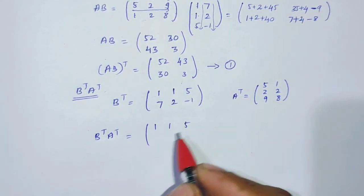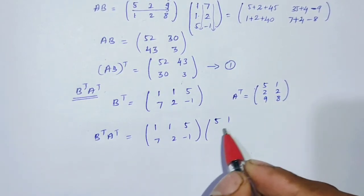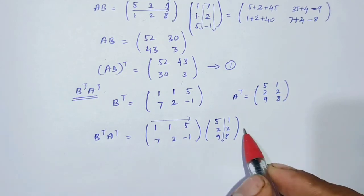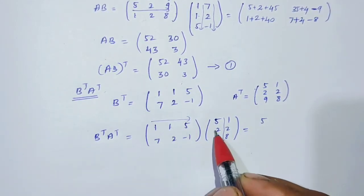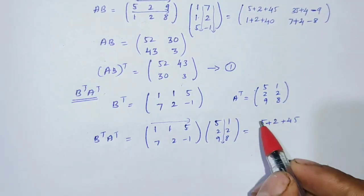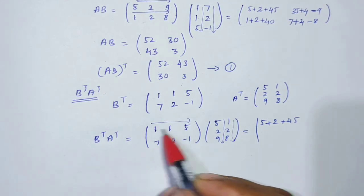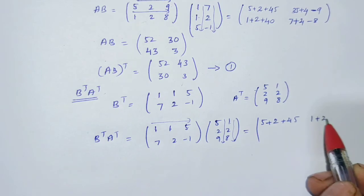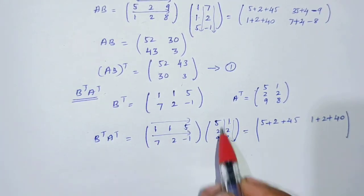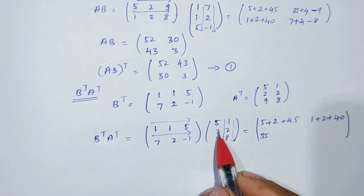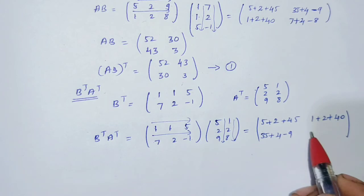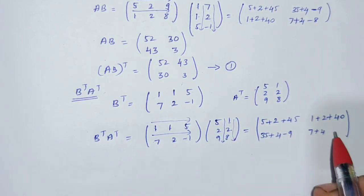B transpose [1, 2; 7, 5; 1, -1] into A transpose [5, 1; 2, 2; 9, 8]. Matrix multiplication: first row, first column: 1×5=5, 2×1=2 — that is one element, plus plus. Next, first row, second column: 1×1=1, 2×2=4, plus 8×40=... Second row, first column: 7×5=35, 2×2=4, (-1)×(-9)=minus 9. Next, second row, second column: 7×1=7, 2×2=4, minus 1×8=minus 8.